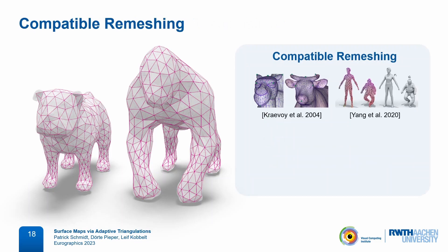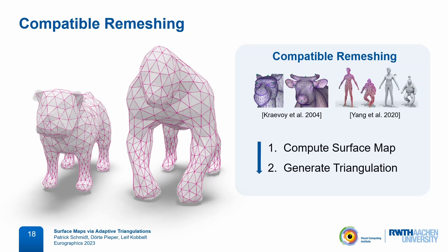A related problem setting is compatible remeshing, where these triangulations themselves, instead of the homeomorphism they imply, are considered the output. However, most methods here follow a two-step process where they first have to solve the entire surface mapping problem and only then generate a common triangulation. In this work, we will combine these two steps in a single optimization.